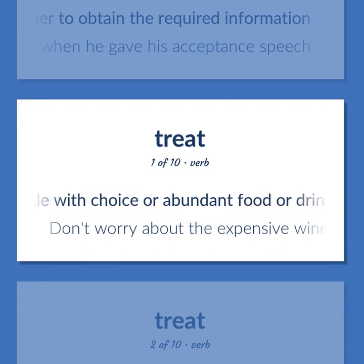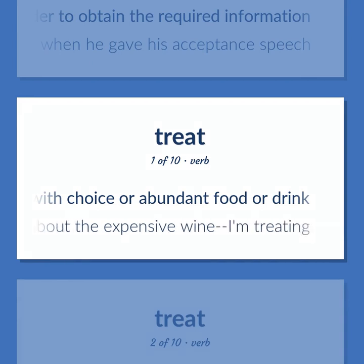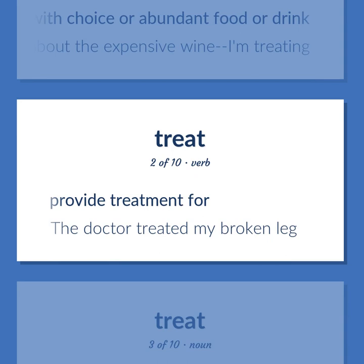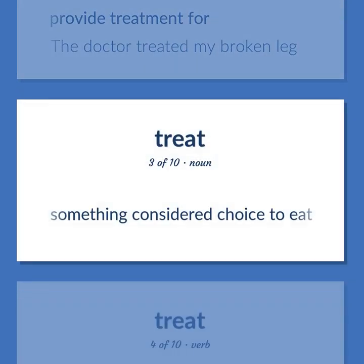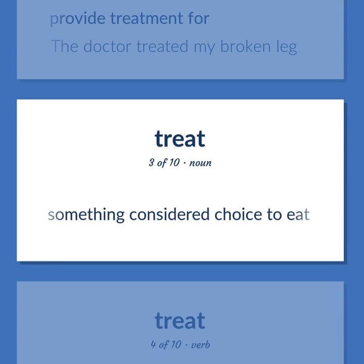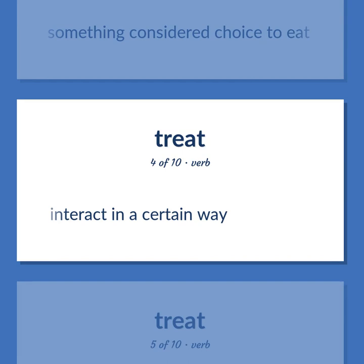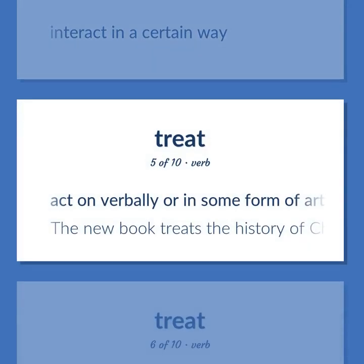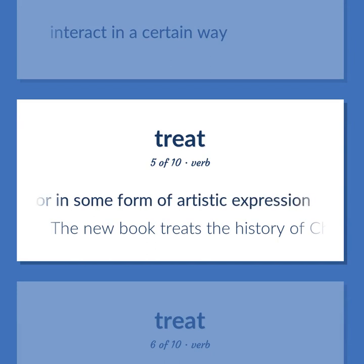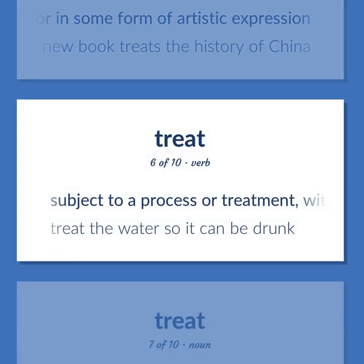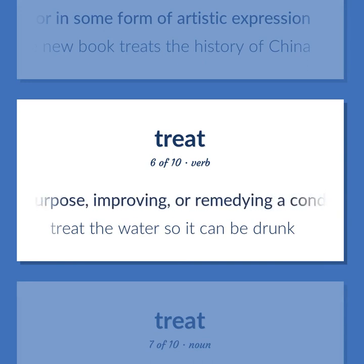Provide with choice or abundant food or drink — don't worry about the expensive wine, I'm treating. Provide treatment for — the doctor treated my broken leg. Something considered choice to eat. Interact in a certain way. Act on verbally or in some form of artistic expression — the new book treats the history of China. Subject to a process or treatment with the aim of readying for some purpose, improving, or remedying a condition — treat the water so it can be drunk.